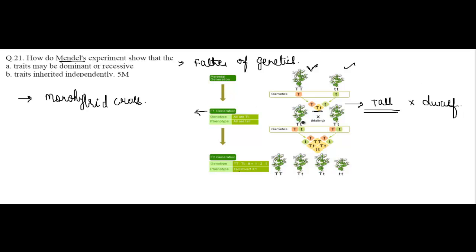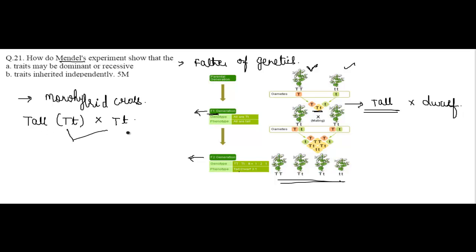Then he crossed the tall pea plants obtained in the F1 generation. He found that both tall and dwarf plants were obtained in the second generation — that is, the F2 generation, also called the second filial generation. When he crossed these F1 plants, he got both tall and dwarf plants.